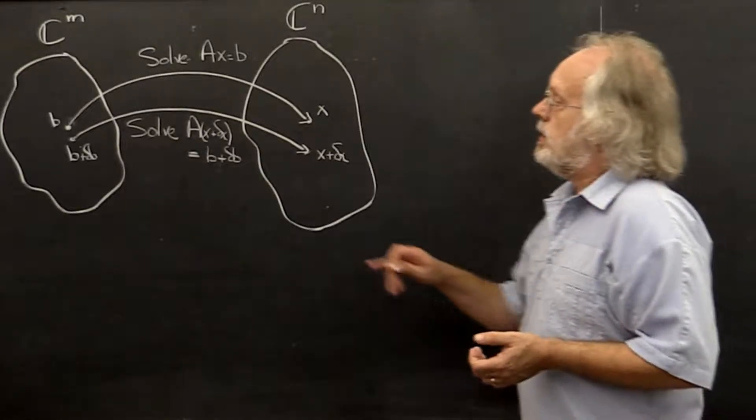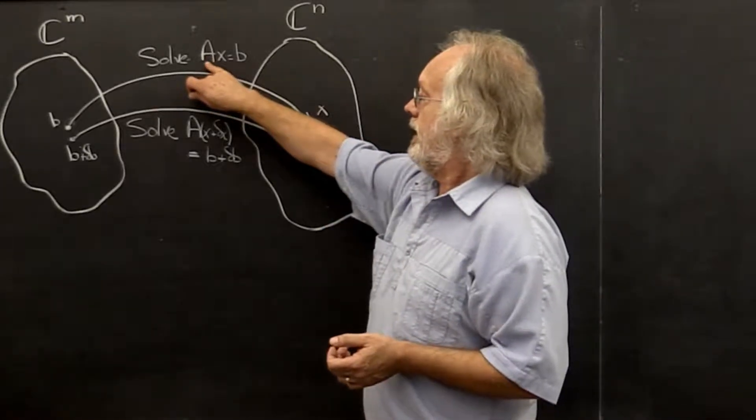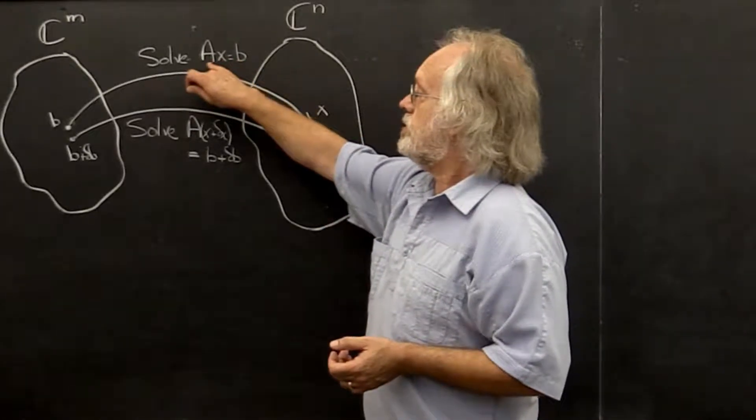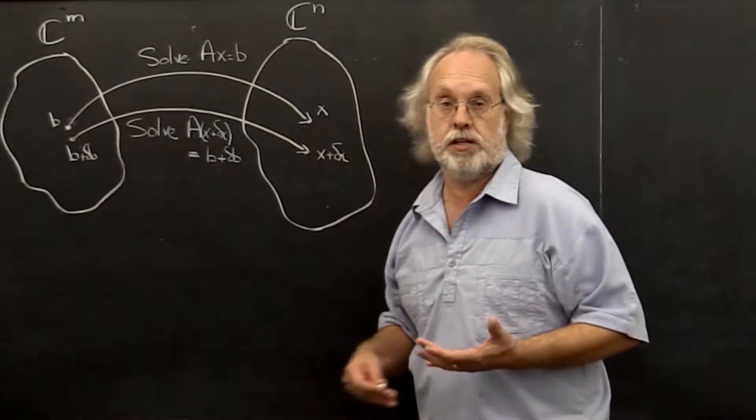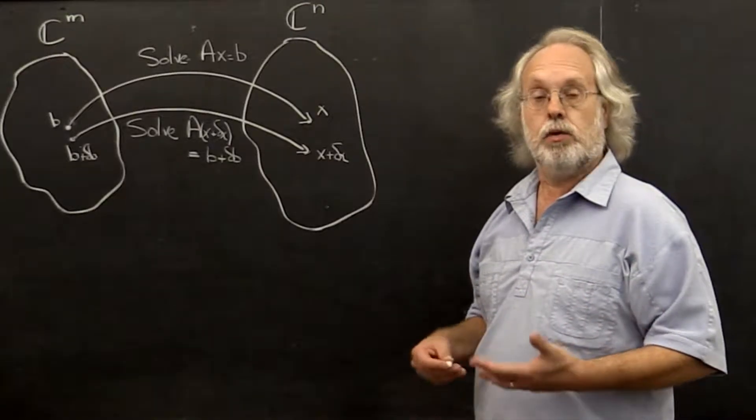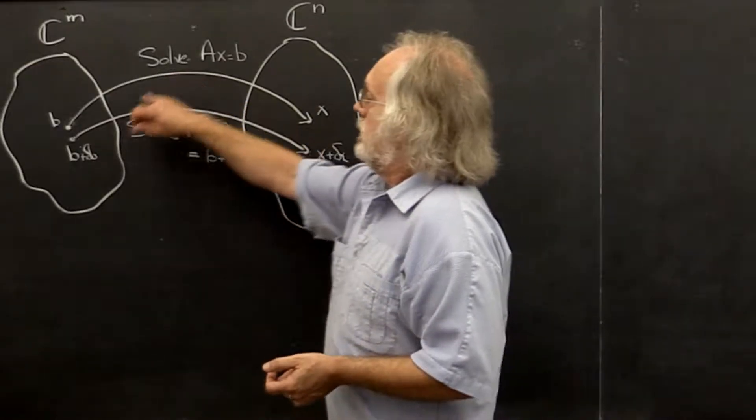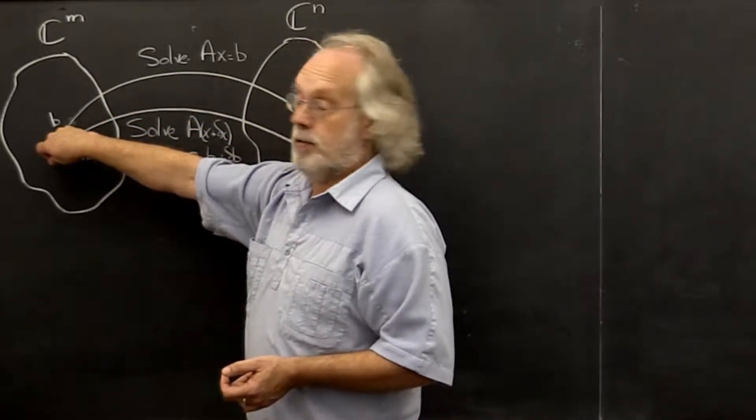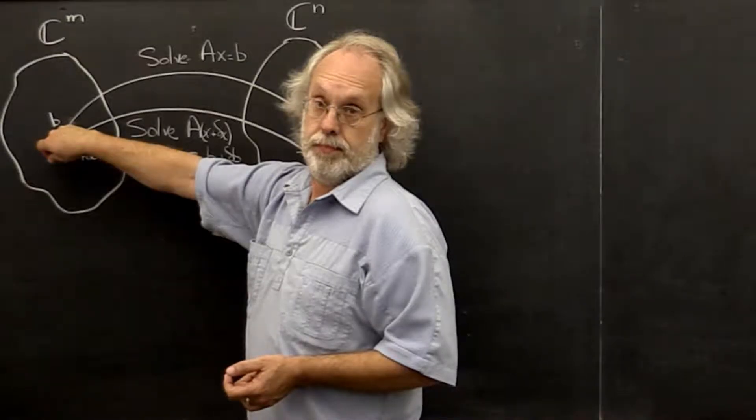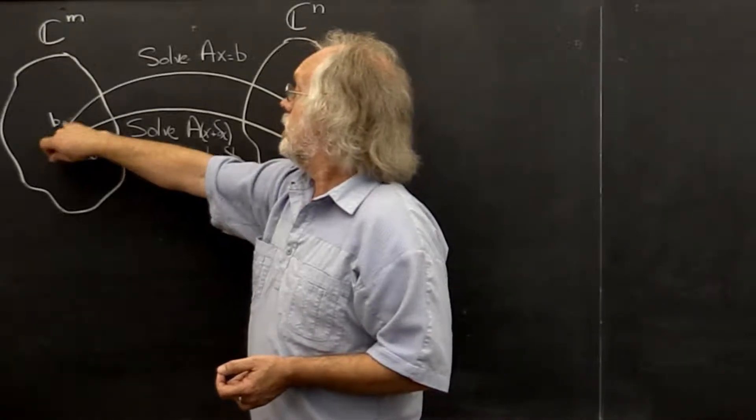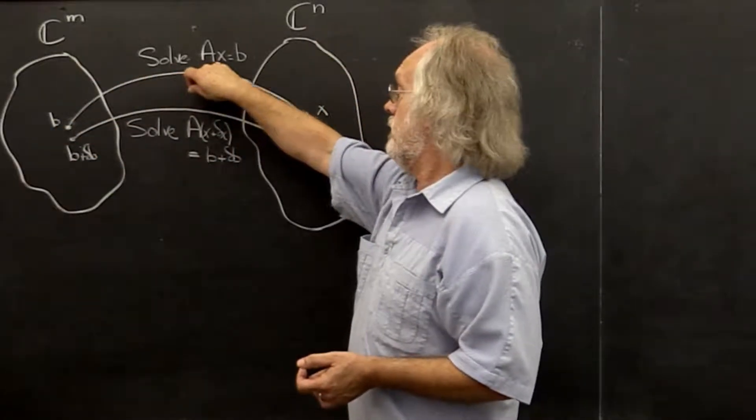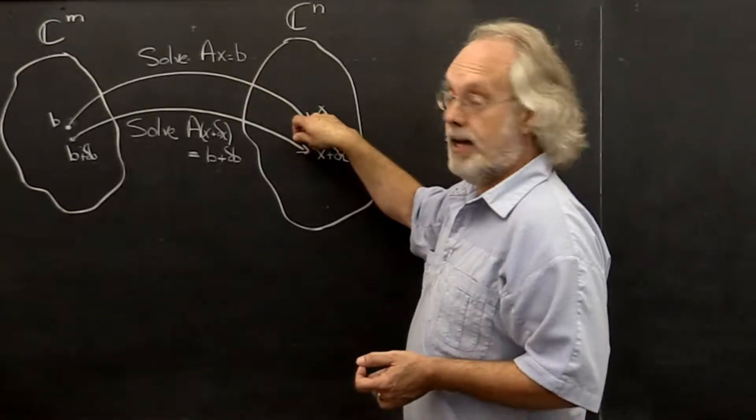And to do that, let's focus on solving A times x equals B. Let's assume that A is a square matrix that is non-singular, in other words it has an inverse. Now you start with a right-hand side B, that's the input. You solve A x equals B, that gives you an output vector x, the solution.